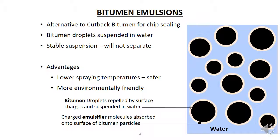Emulsifiers used in bitumen emulsions are usually cationic emulsifiers, so they have a positive charge. This allows the bitumen droplets to be attracted to chip and aggregate particles, which often have a mild electric charge when damp. When laid, the bitumen droplets are attracted to the base course, which causes them to coalesce into larger bitumen particles. The addition of chip adds more surfaces for the bitumen droplets to accumulate and coalesce on. In addition, when the emulsion is spread in a thin film over a wide area, water evaporation increases significantly, causing the bitumen droplets to be forced together.